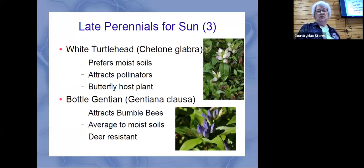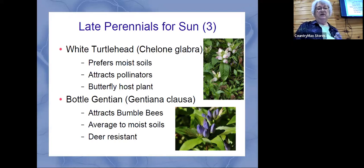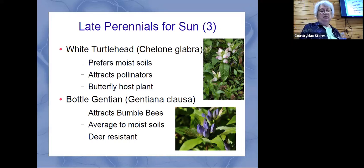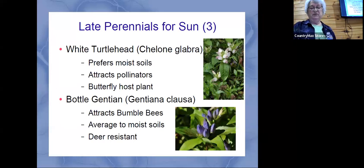The turtlehead is named because that's kind of how the flower looks. It's an interesting flower and stays quite small. A lot of these prefer moist soil. The bottle gentian is another interesting plant you don't see too often — bumblebees like it because they need to pry open the flower, and a bumblebee is big enough to do that. It's really pretty, coming in little clusters.